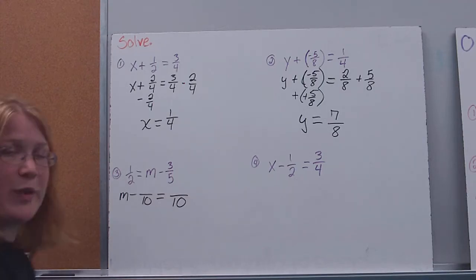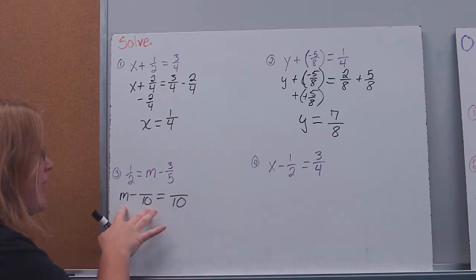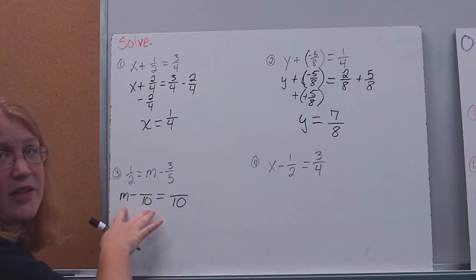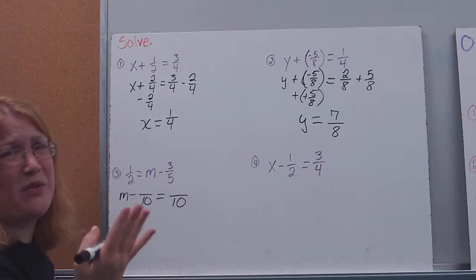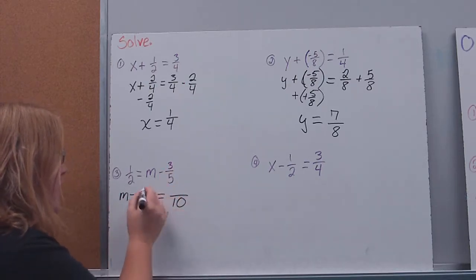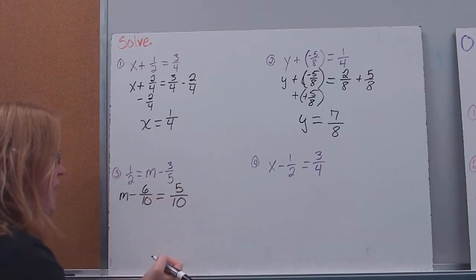So I'll rewrite it that way for you guys, and I'm going to rewrite this also with its equivalent fractions. I have a two and a five, which means ten is going to be my common denominator. So here you'll notice I just took my m minus three-fifths, and I put it on the other side so the variable's on the left. Some kids like it better there. Makes no difference to me. Three-fifths becomes six-tenths. One-half becomes five-tenths.